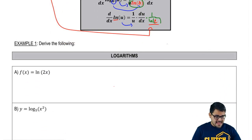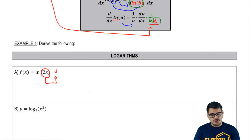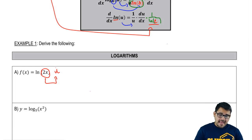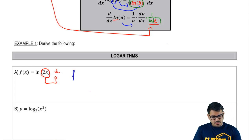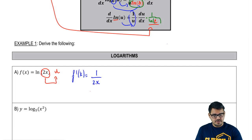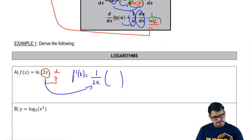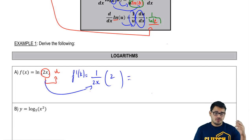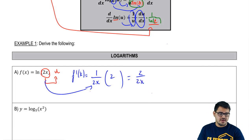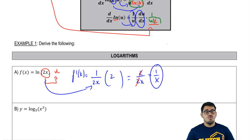Example A: f(x) = ln(2x). Here, 2x is our u — whatever is inside the parentheses. Taking the derivative, we get 1 over u, which is 1 over 2x, times the derivative of u. The derivative of 2x is 2, giving us 2 over 2x. Canceling the 2s, our derivative is 1 over x.